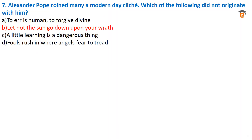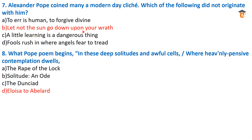Question number seven: Alexander Pope coined many modern-day clichés — which of the following did not originate with him? The correct answer is option B — 'Let not the sun go down upon your wrath.' This was not originated by Alexander Pope; all other options are Pope's proverbs or clichés. 'Let not the sun go down upon your wrath' is an expression taken from the Bible, meaning do not commit any sin or act when you are angry.